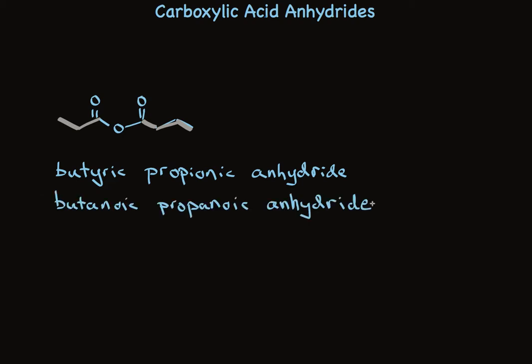Most of the time we'll see anhydrides that are symmetrical. Both components come from the same carboxylic acid so then you just say one name. This is by far the most commonly used anhydride, acetic anhydride.